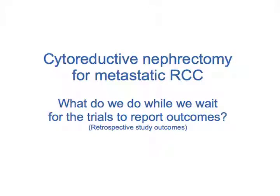While these trials are accruing patients and we're waiting for outcomes, what do we do? We turn to retrospective data — looking at what has happened in the past five to seven years with patients in this era. These are patients selected to undergo nephrectomy in the setting of targeted therapy with sunitinib, and then comparing those to patients who did not undergo nephrectomy.